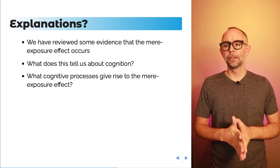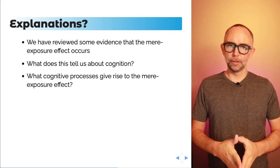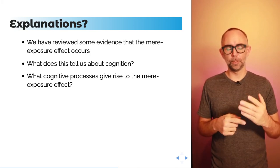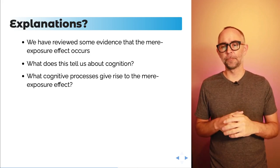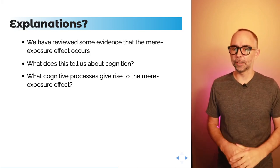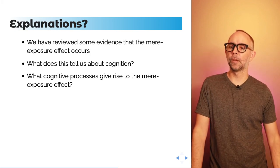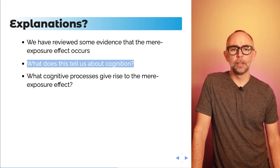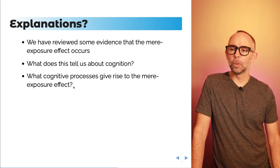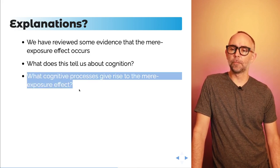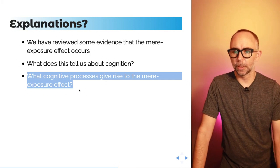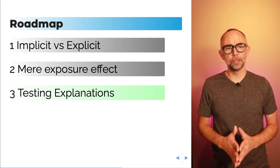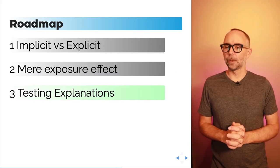We've reviewed evidence that the Mere Exposure Effect occurs in various ways — the more you see something, the more you tend to give it a positive evaluation. In the next part of this mini lecture, we'll consider what the Mere Exposure Effect tells us about cognition and what cognitive processes give rise to it. We'll talk about testing various explanations of the Mere Exposure Effect.